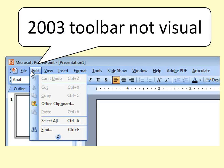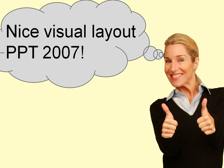This is what the toolbar looked like in PowerPoint 2003, and it was fine, but it really wasn't that visual. You just had your menus across the top and drop-downs. PowerPoint 2007 changed all that, and let's go ahead and get into PowerPoint 2007 and take a look.